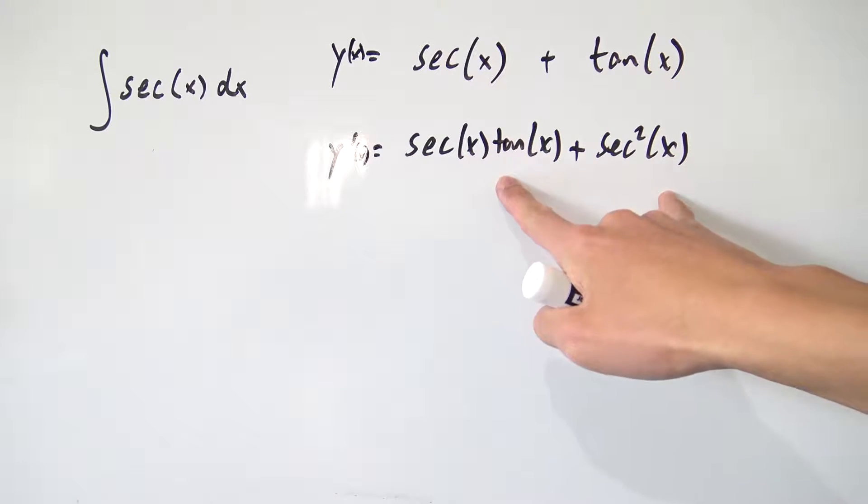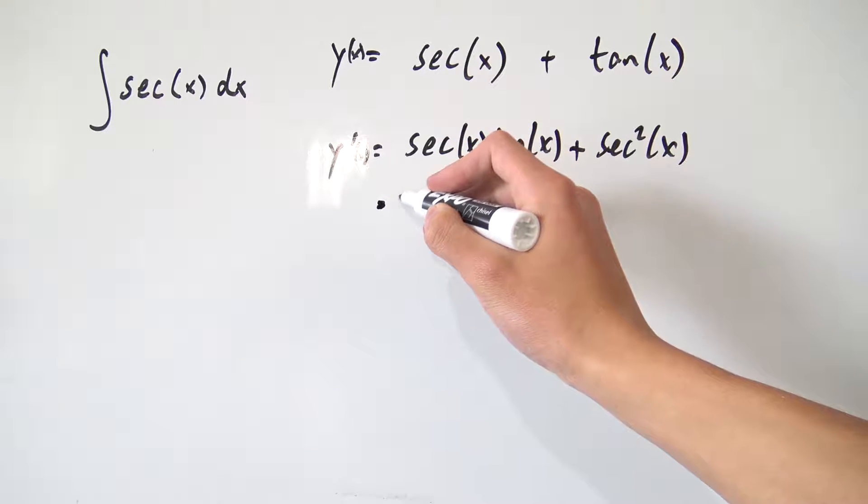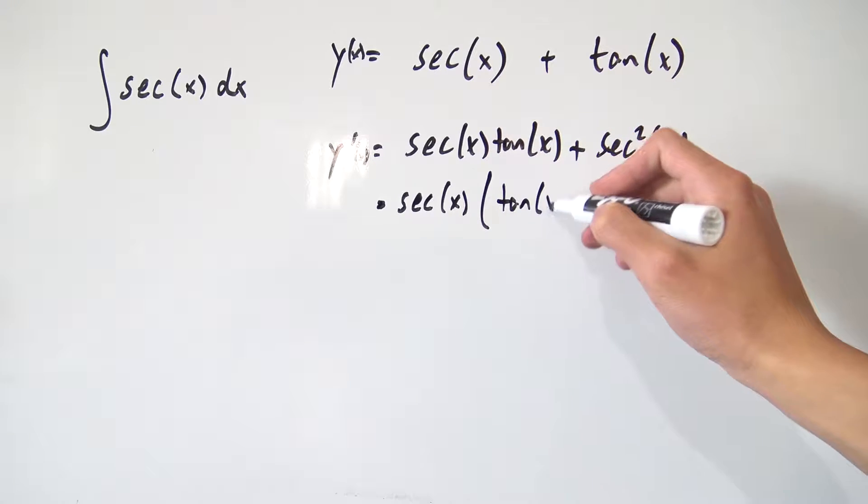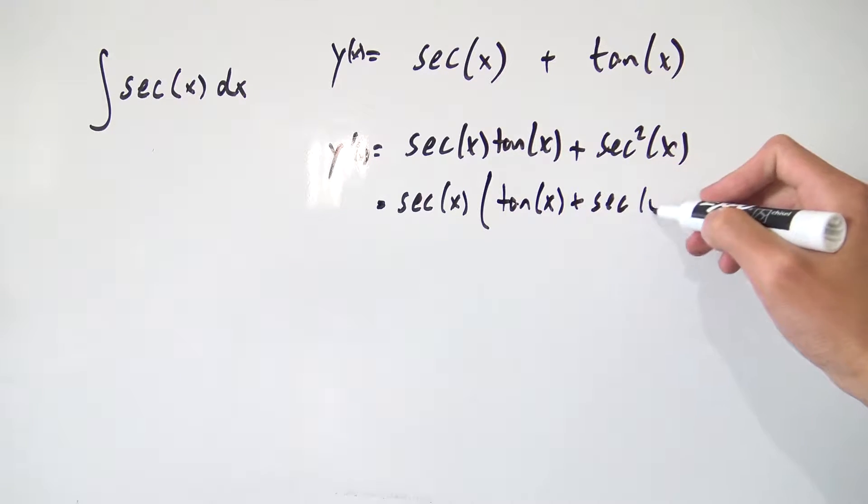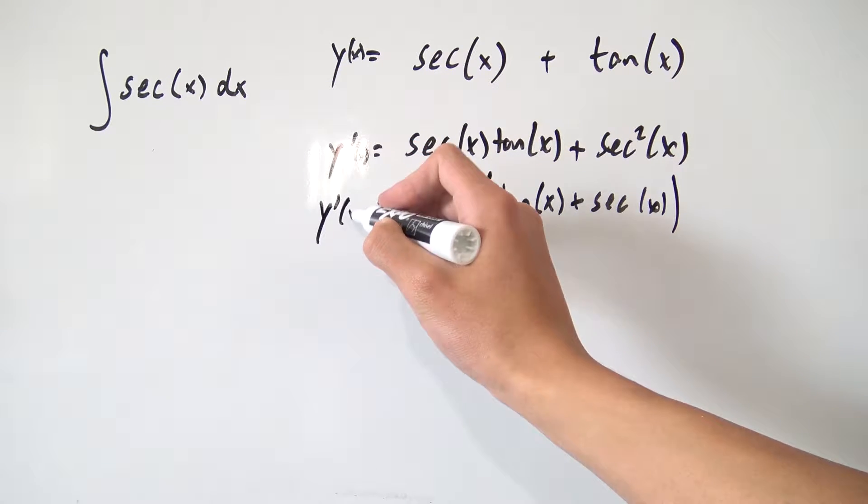So y prime is equal to this thing right here. So as I said before, we have a common factor of secant of x. So why not factor that out? So we have secant of x times the tangent of x plus the secant of x. So this thing right here is still y prime of x.